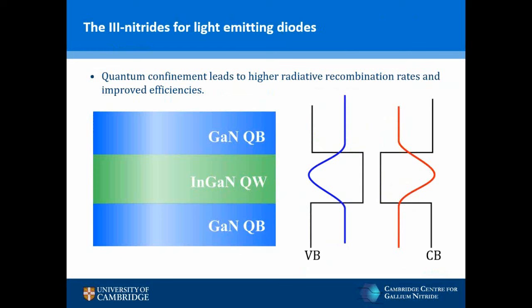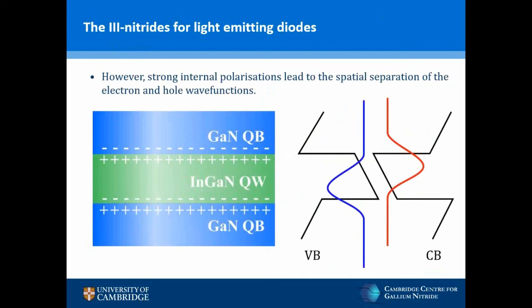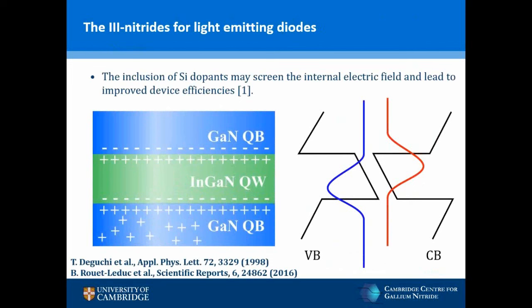Whilst quantum confinement leads to higher radiative recombination rates, the three nitrides have non-centrosymmetric crystal structures, which leads to a strong internal electric field that separates electrons and holes and reduces efficiency — also known as the quantum confined Stark effect. One approach to mitigate the electric field is silicon doping, which induces positive charges to counteract the internal electric field. There is also an increasing body of work suggesting that optimising device efficiencies requires variations in silicon doping throughout the multiple quantum well layers, and hence nanocathodoluminescence is necessary to study individual quantum wells in high-efficiency commercial devices.